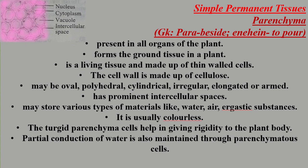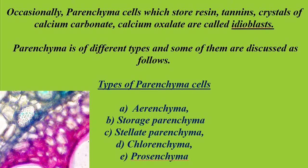The turgidity of parenchyma cells gives rigidity to the plant body, and parenchyma cells also participate in the partial conduction of water. Occasionally they store resins, tannins (a secondary metabolite), and crystals of calcium carbonate and calcium oxalate. Cells that store these substances are called idioblasts.